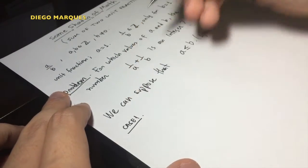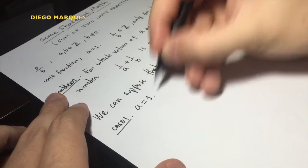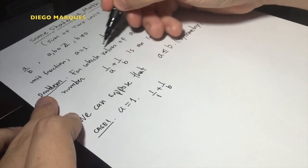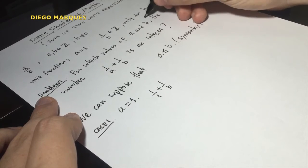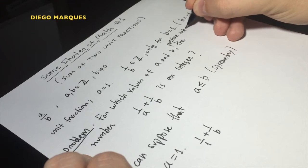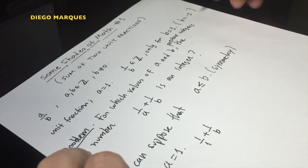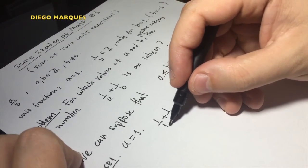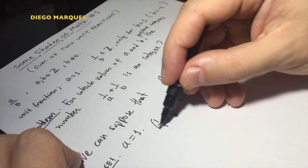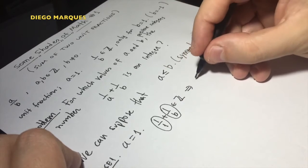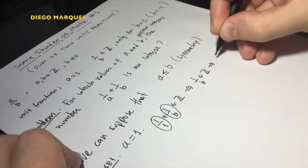So first, case number one: if a is equal to 1, we have 1 over 1 plus 1 over b. For which values of a, b positive integers? So when a is equal to 1, we have 1 over 1 plus 1 over b. This being an integer, but this number is an integer, so this guy must be an integer.